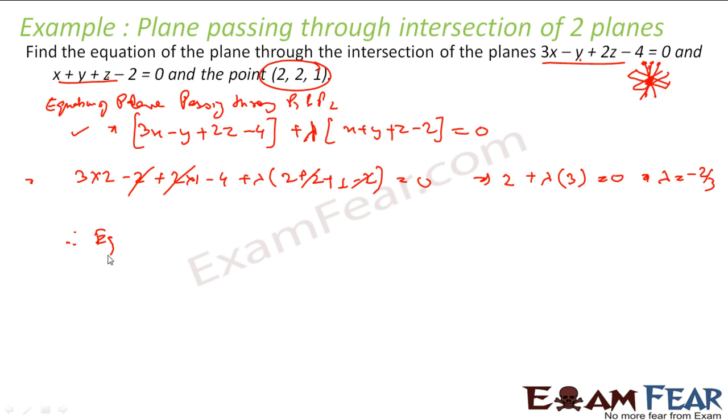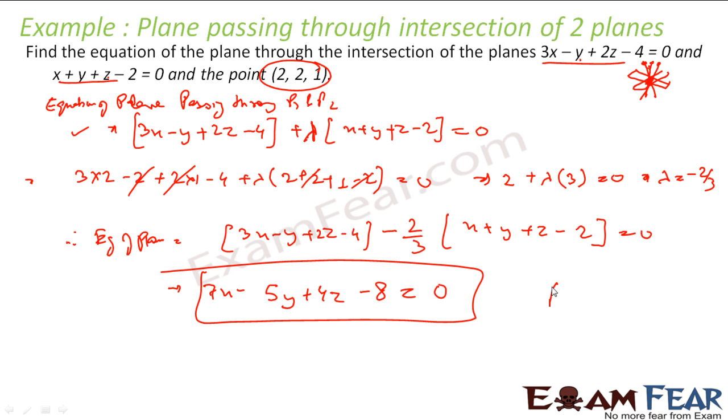Therefore, my equation of plane is 3x minus y plus 2z minus 4 plus lambda, that is minus 2 by 3, into (x plus y plus z minus 2) equals 0. So if you solve this, what you get is 7x minus 5y plus 4z minus 8 equals 0, and that is my answer. So this is the equation of plane. Very simple: if you have two equations, just add them with a lambda, then you are given a point, you put that value in the equation, you find the lambda, you replace the lambda with the right one, and you get the final equation.